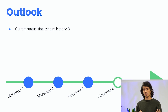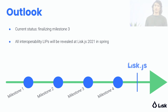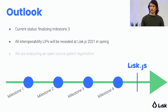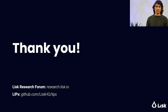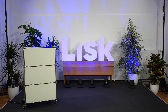Let me conclude with an outlook. As mentioned, we are currently finalizing milestone three. All interoperability LIPs will be revealed next spring at LISC.js 2021. We are also currently evaluating the possibility of having an open source patent registration, which is why we are not able to give too many technical details today. Thank you, and I'll leave you with a couple of links to the LISC Research Forum and to the LISC repository on GitHub.